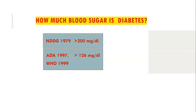Now the question arises: how much blood sugar indicates diabetes? For the first time in history, in 1979, the National Diabetes Data Group suggested a figure of 200 mg per deciliter — meaning if blood sugar is greater than 200 mg per deciliter, the person would be called diabetic. This figure was further reduced to 126 in 1997 by the American Diabetes Association and WHO, further supported in 1999. Before 1979, nobody knew which sugar level was termed as diabetes.